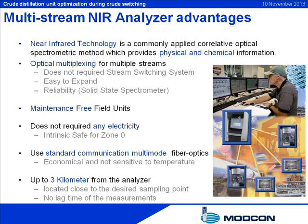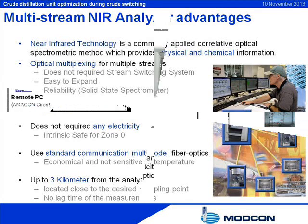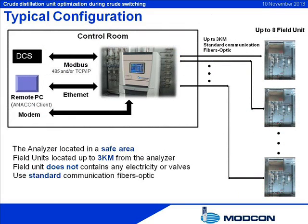This technology enables connection of up to 8 process stream sensors — which use no electricity and contain no moving parts — to a single main analyzer situated in the control room. The special software installed on the analyzer compares analyzer readings with laboratory results and enables the automatic correction of models if systemic disagreement between results is determined.